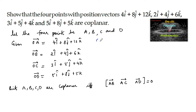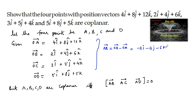So here we can write: AB vector = OB − OA = −2i − 4j − 6k. And AC vector = OC − OA: 3 − 4 = −1 for i, 5 − 8 = −3 for j, and 4 − 12 = −8 for k. So AC = −i − 3j − 8k.